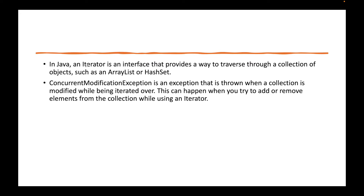Before we try to understand the difference, two things we have to understand. First is what is the iterator, and then concurrent modification exception. Iterator is an interface using which we try to traverse through a given collection. Like if you have a collection of different objects, maybe five integers, how would you traverse? We use a loop. In Java, there is an iterator interface that we use. A for loop internally will anyway implement your iterator. Basically, we want to iterate or traverse through all the elements and do whatever we want, whether we want to print or do some logic.